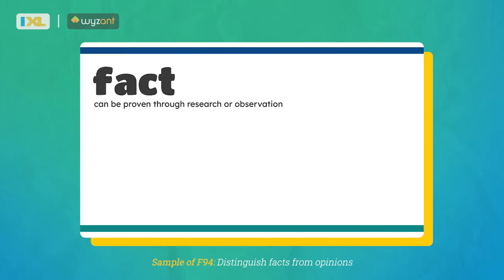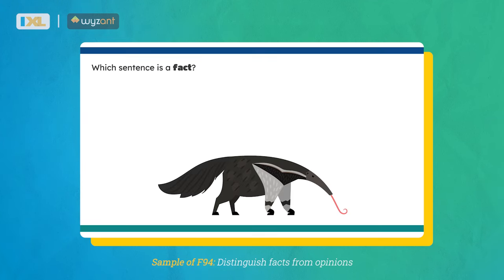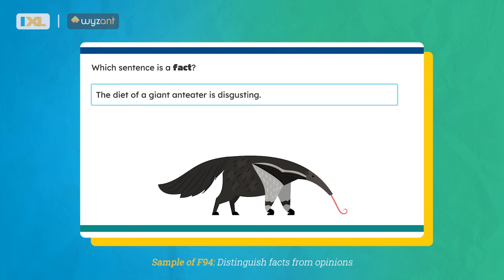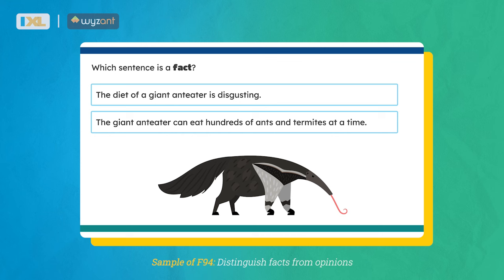A fact is a statement that can be proven through research or observation. An opinion expresses a personal feeling, belief, or idea. Today we'll practice deciding whether a sentence states a fact or expresses an opinion. Which of these sentences is a fact about the giant anteater? The diet of a giant anteater is disgusting. Or, the giant anteater can eat hundreds of ants and termites at a time. People have different beliefs about what's disgusting, so this isn't something that can be proven through research or observation. But you can watch an anteater eat hundreds of ants and termites at a time, so the second sentence is a fact.